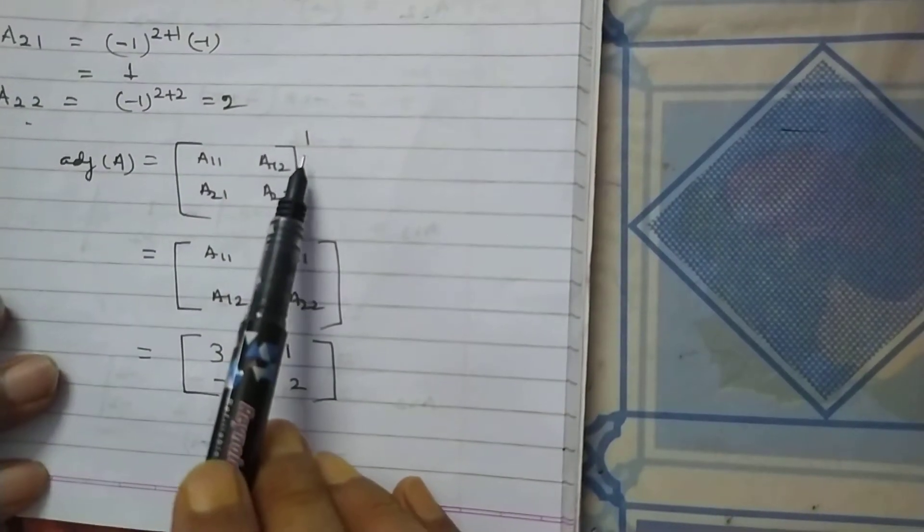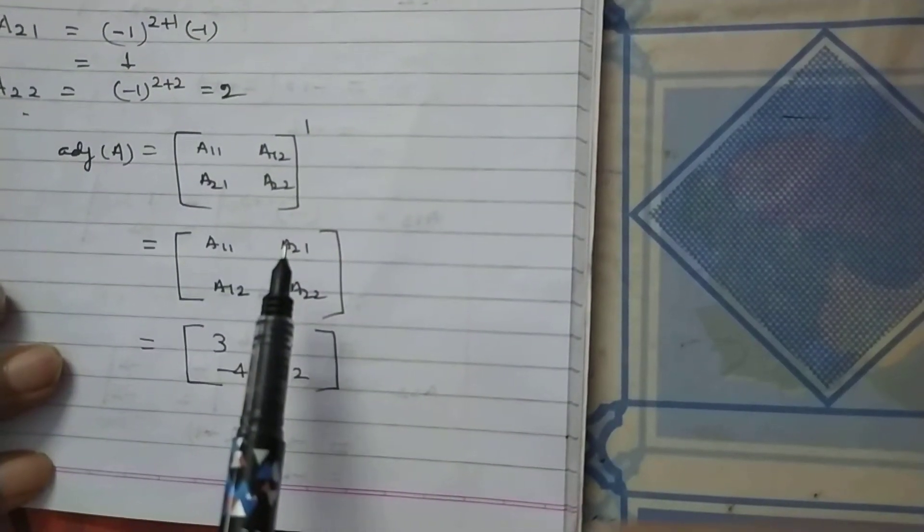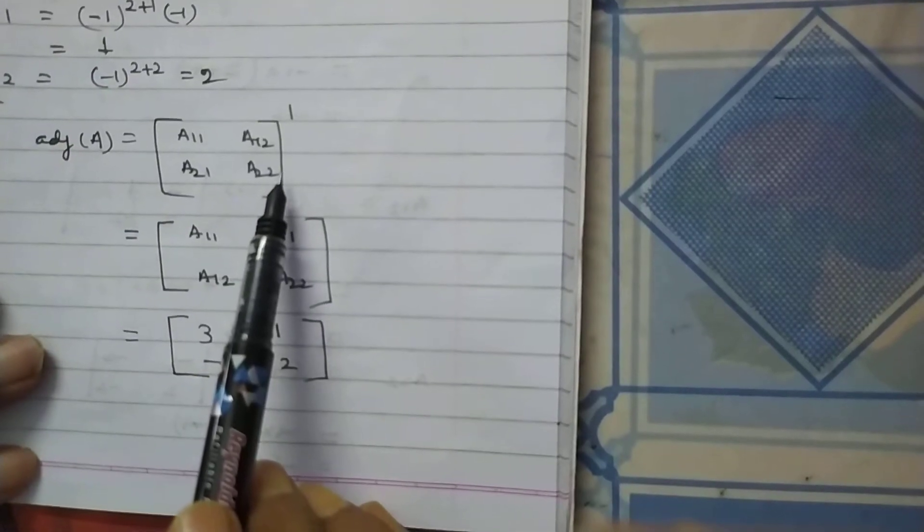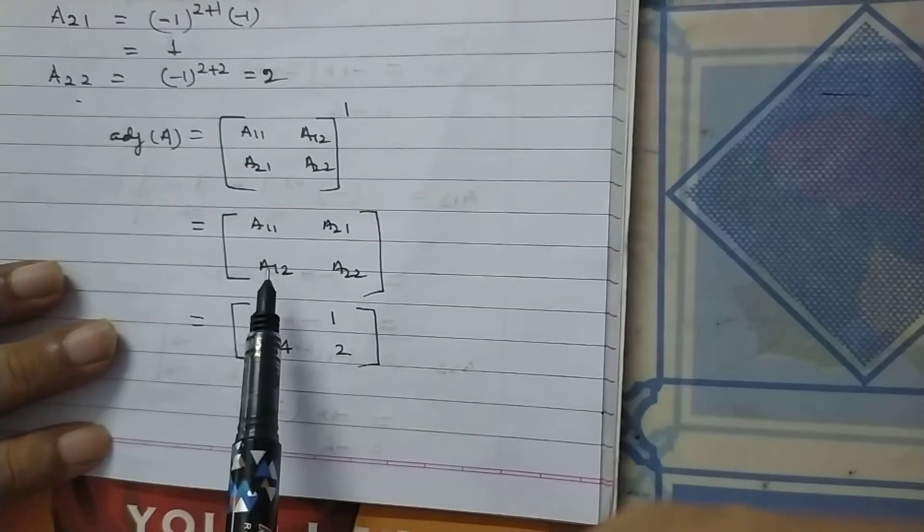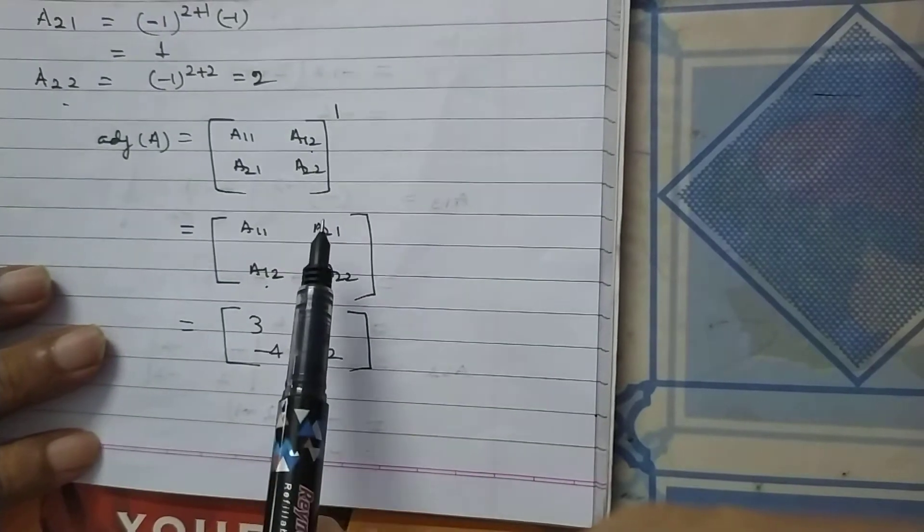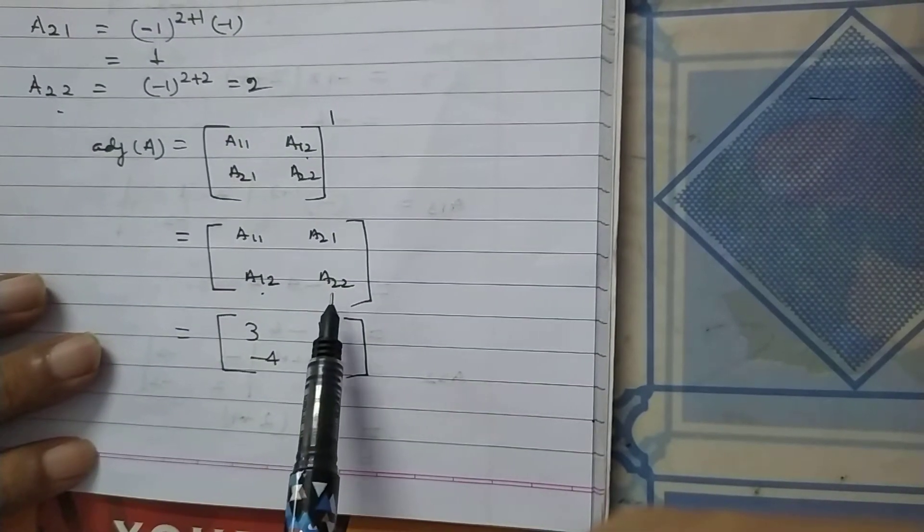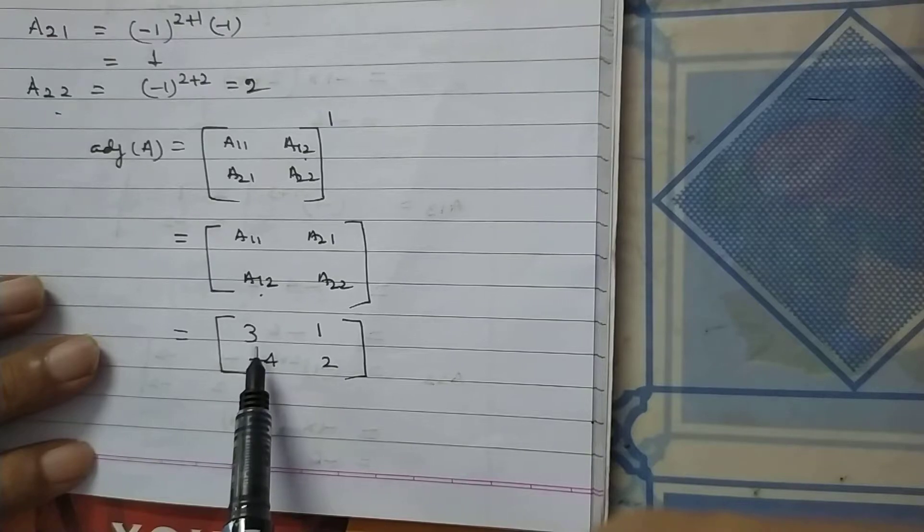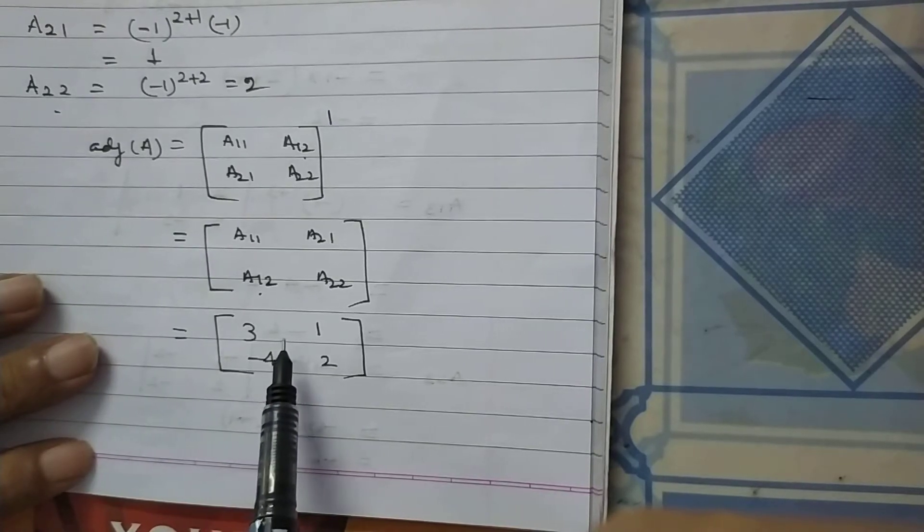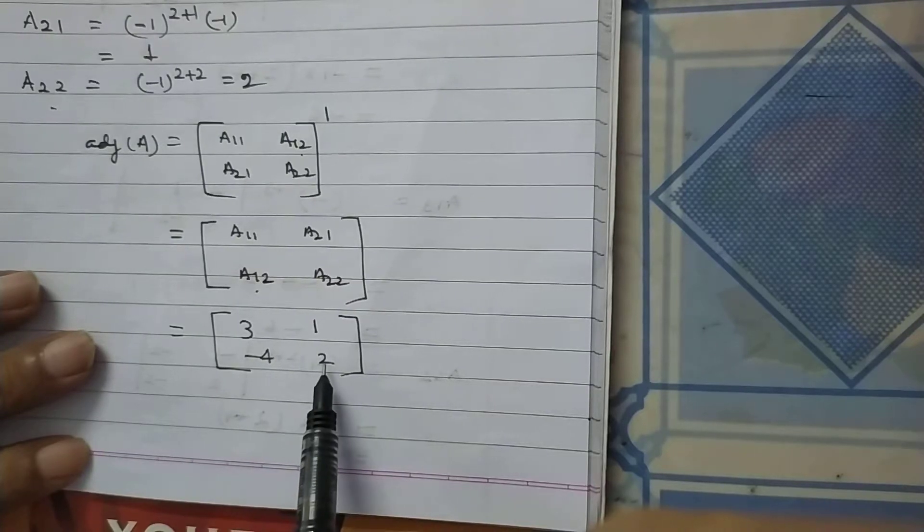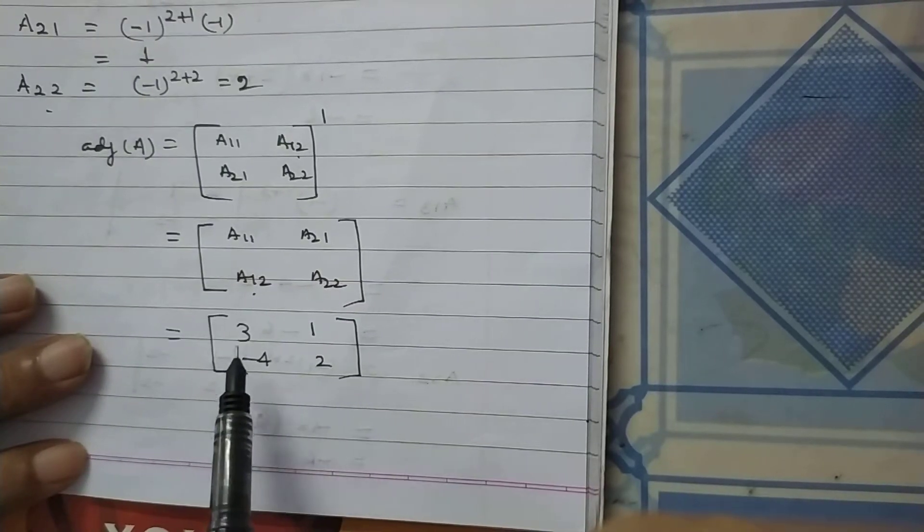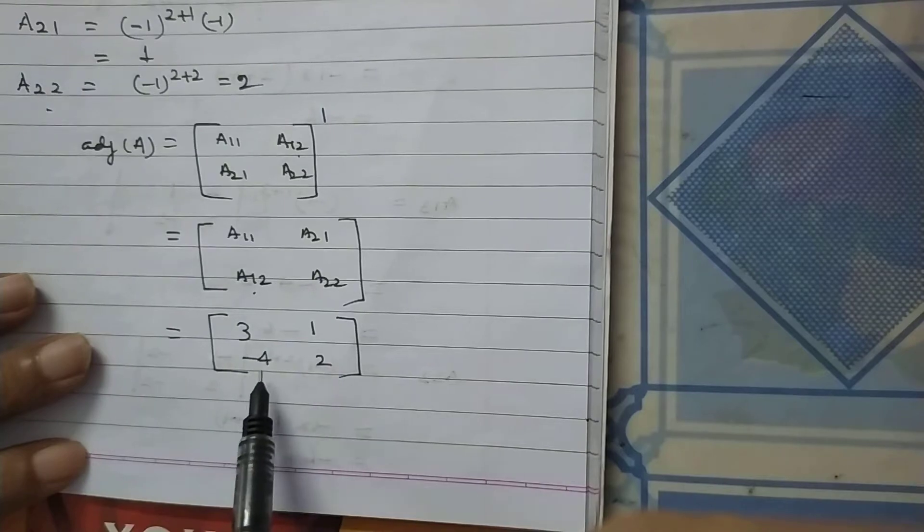So, now I want to transpose of this matrix. So, it will be A11, A21, A12, A22. Now, by putting the value of A11, A21, A12 and A22, we have 3, 1, minus 4, 2.